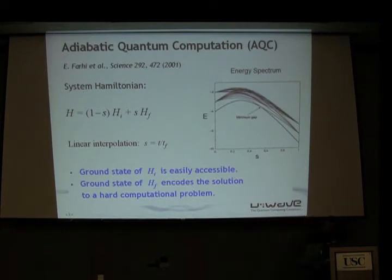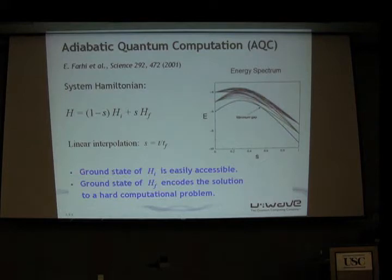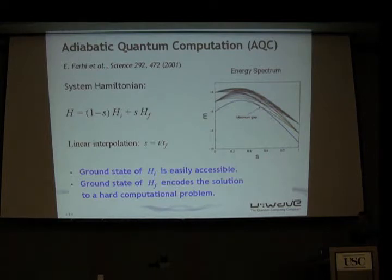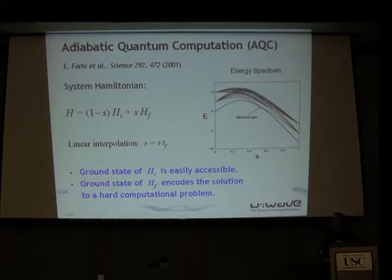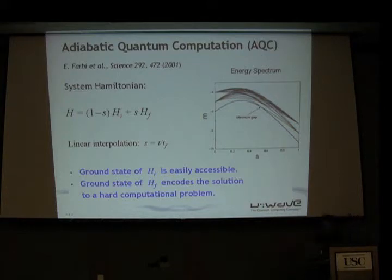Adiabatic quantum computation is a very simple algorithm. The Hamiltonian is written in such a way that at the beginning it starts from the initial Hamiltonian, and by design the ground state is easily accessible — either by relaxation or by preparation. The final Hamiltonian at the end of evolution is by design such that the ground state solves the problem. The hope is that if you evolve along the ground state very slowly, you stay on it and solve the problem at the end.